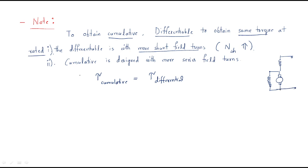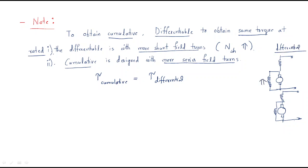The second thing: the cumulative motor is designed with more series turns. For cumulative, you should increase the series turns — shunt is okay for differential, but for cumulative you should increase the series turns. Then both the cumulative compound motor as well as the differential compound motor will operate with the same torque.